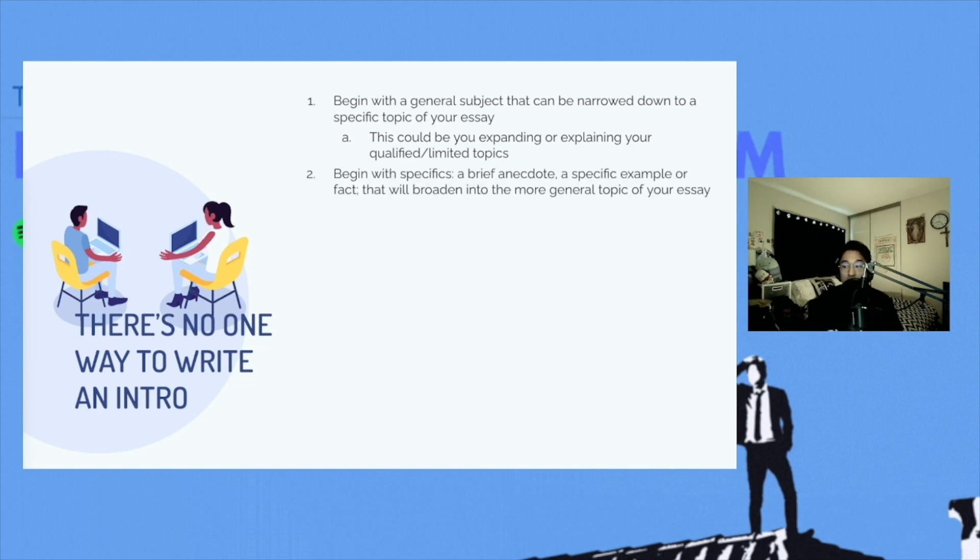You could begin with specifics, a brief anecdote, a specific example, or a fact that will broaden into a more general topic of your essay. So this is kind of like a hook, right? Sometimes you might include a quote, which is one of the other nine common things you can do, or specific facts to grab your reader's attention.